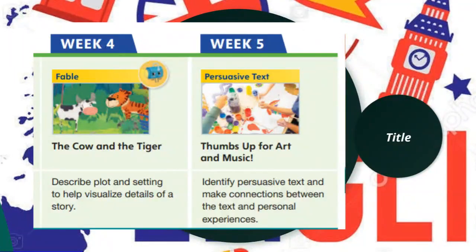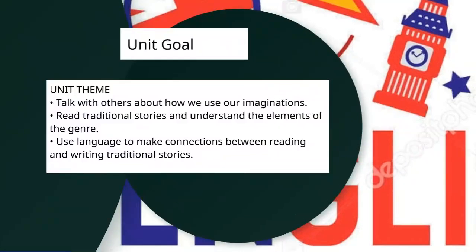In week four we will read 'The Cow and the Tiger,' describing the plot and setting to help us visualize details in the story. The last story is a persuasive text — we will identify it and make connections between the text and personal inferences. The unit goal is: we will talk with others about how we use our imaginations, read traditional stories, understand the elements of the genre, and make connections between reading and writing.